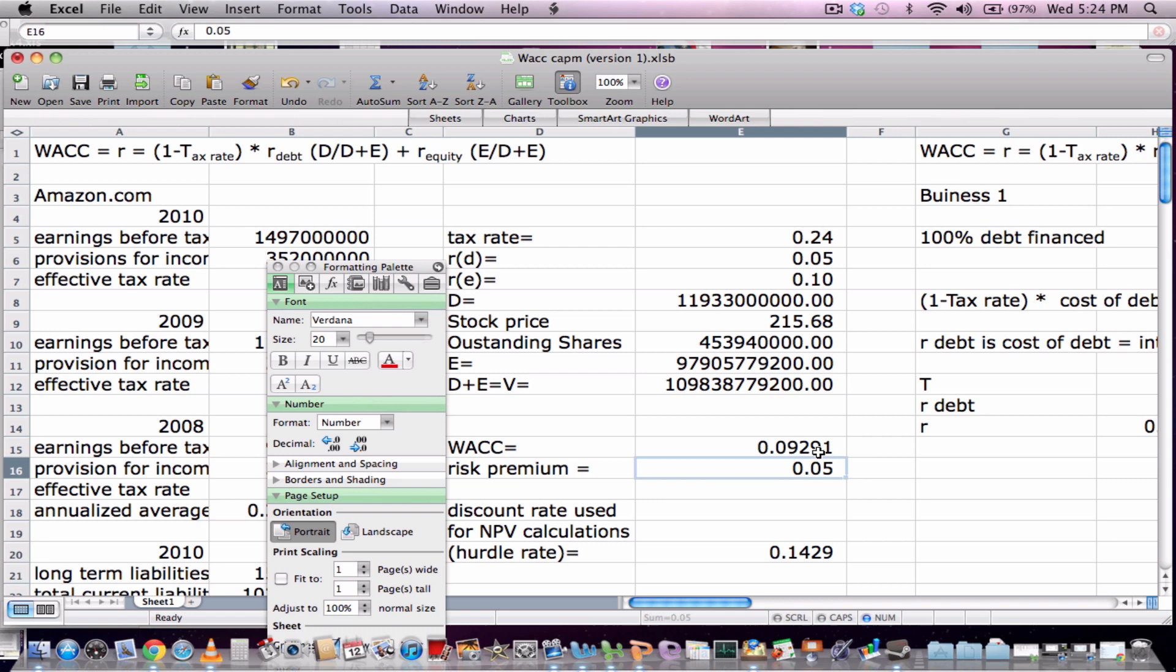Now, if I was working for Amazon.com and I was proposing a new project, say their new tablet or something like that, the managers would add a risk premium to the weighted average cost of capital to find our hurdle rate. And this risk premium will vary depending on their analyses. Well, let's say it's 3%. I'm proposing a fairly safe project.